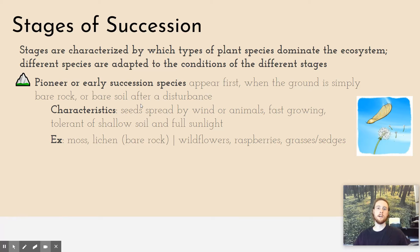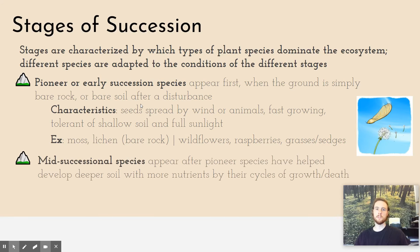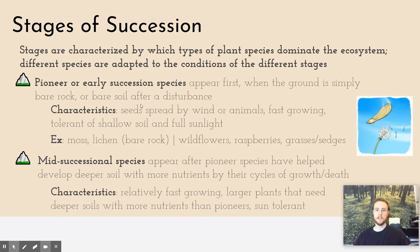Examples of pioneer species include moss and lichen for bare rock in primary succession, or wildflowers, berry-producing plants like raspberries, or grasses and sedges in secondary succession. Pioneer species are always followed by mid-successional species. Mid-successional species appear after a couple of years where the pioneer species have built up the soil so it's a little bit deeper and more nutrient-rich. As those pioneer species grow and die repeatedly, their biomass or organic matter gets added to the soil, increasing its richness and depth over time, which eventually enables the mid-successional species to come in.